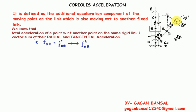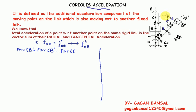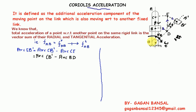The third motion of the slider is known as the Coriolis acceleration. Now let us consider the last part, that is arc EB dash. Arc EB dash equals arc CB dash minus arc CE, and arc CE equals BD.